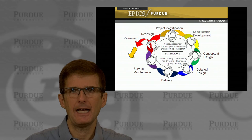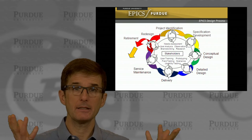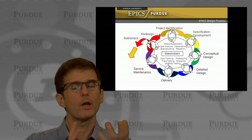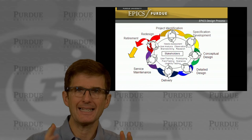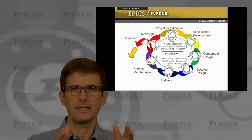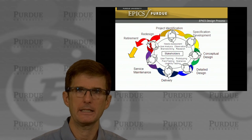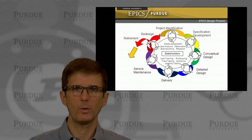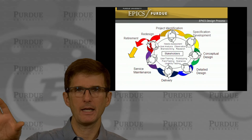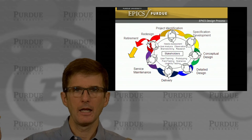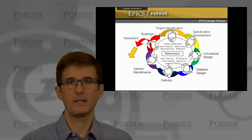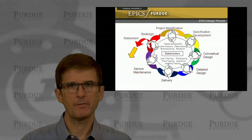Design is taking ideas, identifying needs, developing ideas, and producing a solution. There are a lot of different ways to get there — there's not a single correct path through a design process. What we have is an EPICS process that we've found over 21 years helps students identify the right kind of needs and get an effective project delivered to their community partner. It's broken up into different stages.